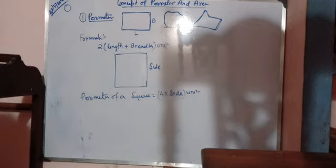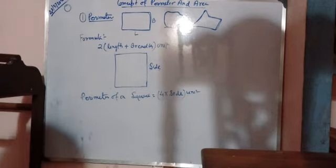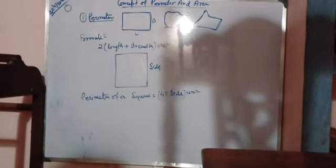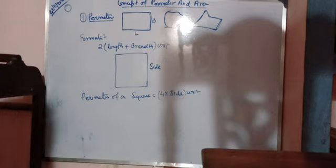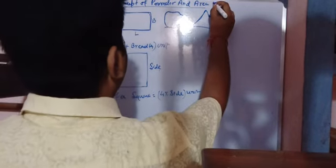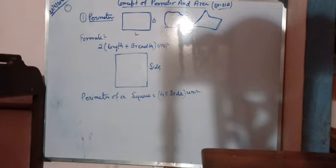Depending on these two formulas, we have Exercise 21. So let's move to the exercise from RS Aggarwal, Exercise 21A. The first question is: find the perimeter of a rectangle in which a length and breadth are given.